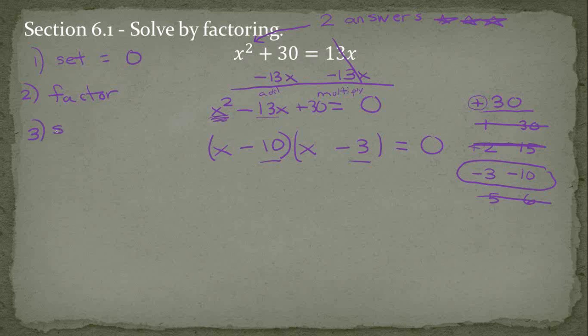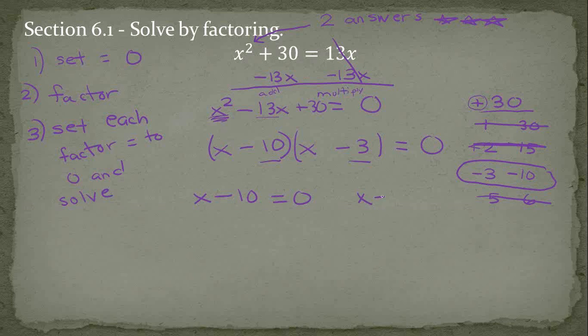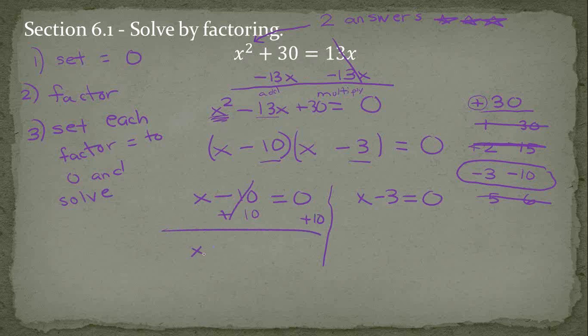The last step of the factoring method is called the zero product property. And you take each factor, and you set each factor equal to zero and solve. Again, don't forget you get two answers. So my first factor is x minus 10, so I'll set that equal to zero. Then I'll take the x minus 3 and set that equal to zero and solve one at a time here. So just two separate equations. Add 10 to both sides to solve this one. So one answer is x equals 10. And the other answer, add 3 to both sides. And you should get x equals 3.